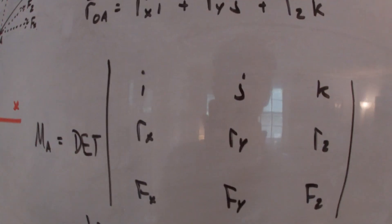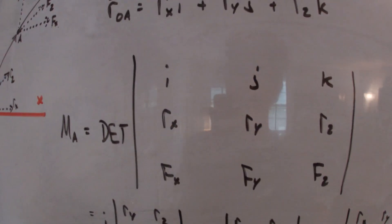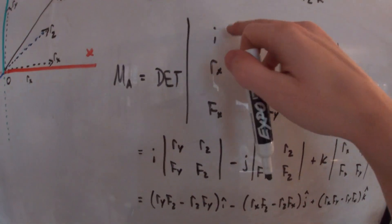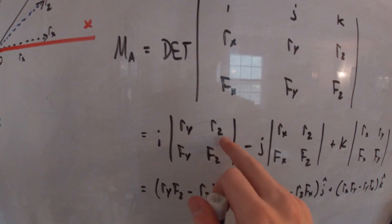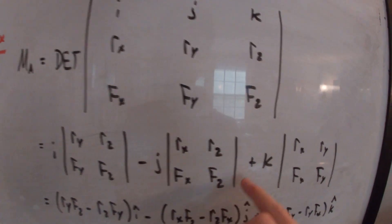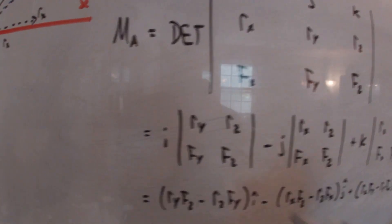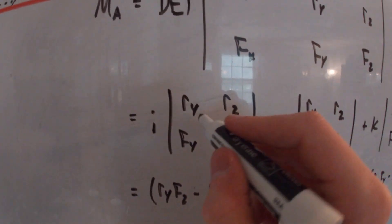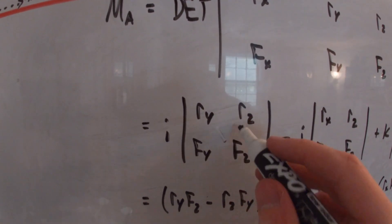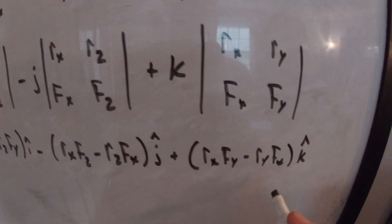When we take the determinant of a 3x3 matrix, we split it up into three smaller 2x2 determinants. So we have I times (Ry·Fz minus Fy·Rz), minus J times (Rx·Fz minus Fx·Rz), plus K times (Rx·Fy minus Fx·Ry). We take the determinant of those three smaller matrices and we get this longer equation for the moment vector.